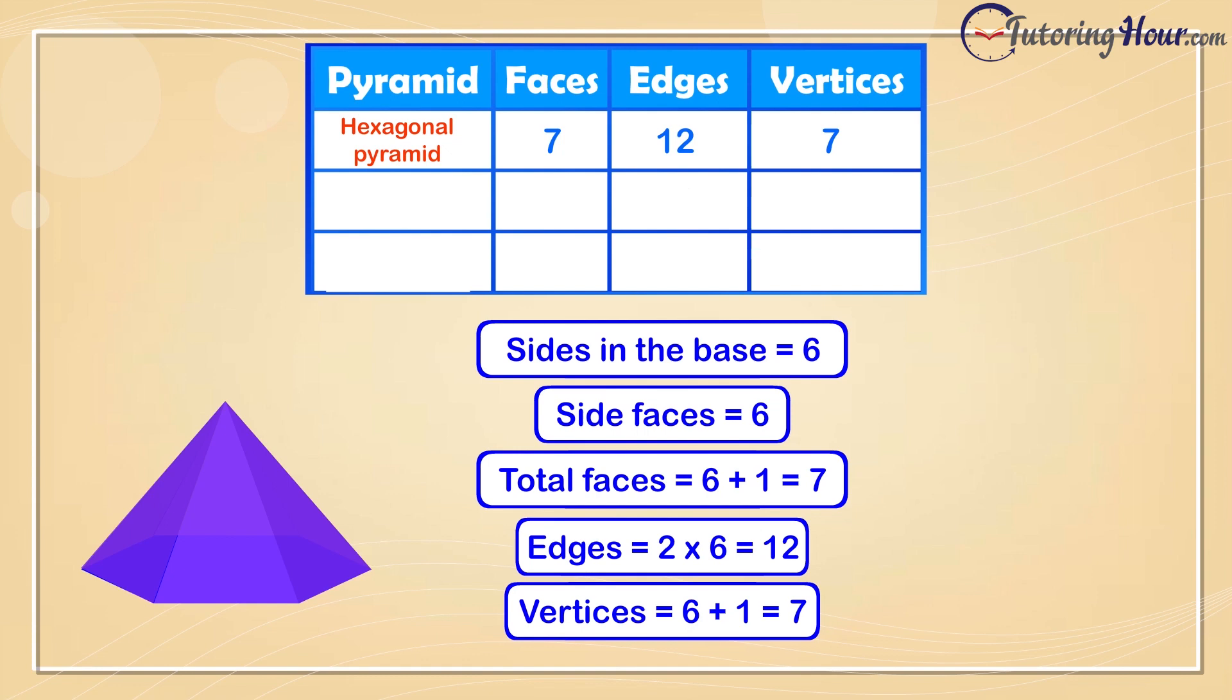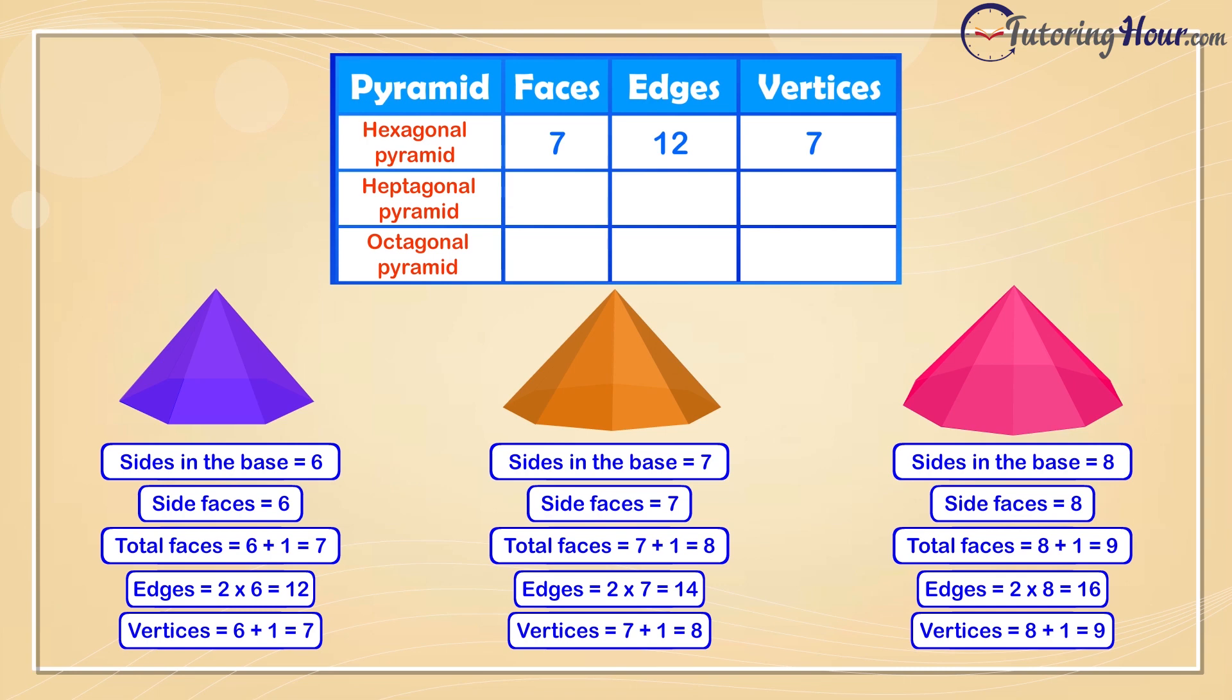We'll quickly do the same for the heptagonal and octagonal pyramids. A heptagonal pyramid has 8 faces, 14 edges, and 8 vertices. And an octagonal pyramid has 9 faces, 16 edges, and 9 vertices.